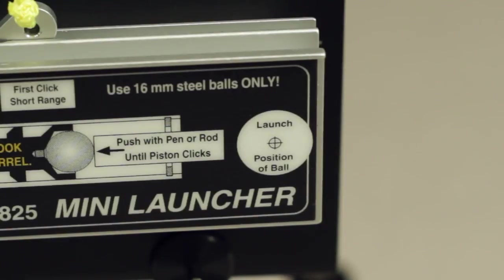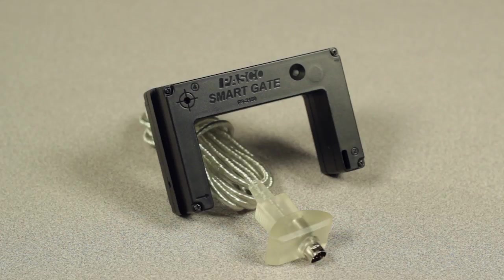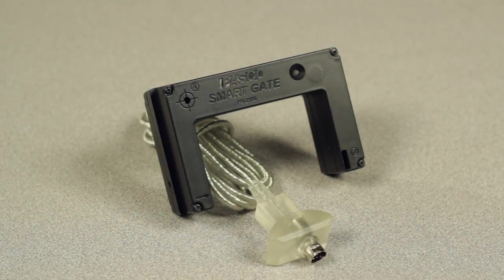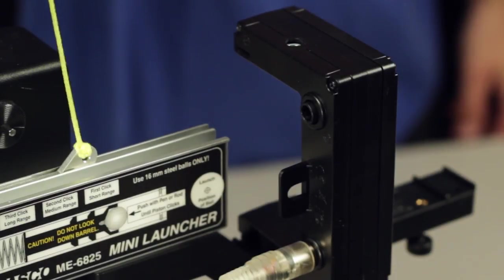On the side of the launcher is a diagram of the projectile as it leaves the muzzle, giving users a clear point from which they can measure launch height. The Mini Launcher can be used in conjunction with the PASCO SmartGate and PASCO Photogate mounting bracket to measure the muzzle or initial speed of the projectile as it leaves the barrel.